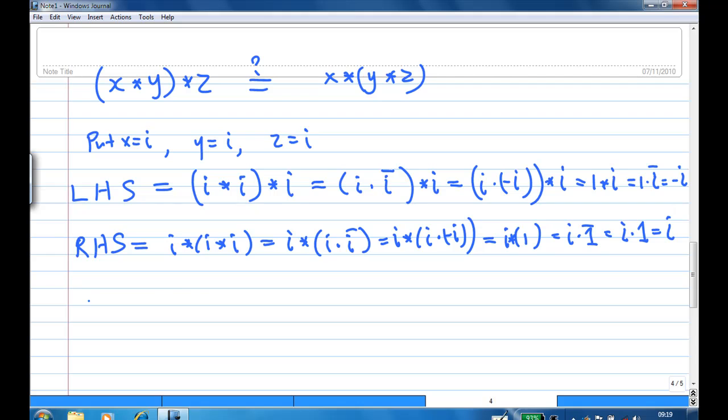So we compare that the left hand side is not equal to the right hand side. The binary operation star is not associative. That is the end of the recording.